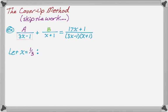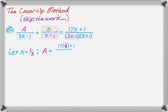Everything on the left-hand side that doesn't involve A gets covered up. On the right-hand side, we cover up the 3x minus 1 and substitute in 1/3. So we get 17 times 1/3 plus 1, over 1 plus 1/3, which works out to 5. So A equals 5.